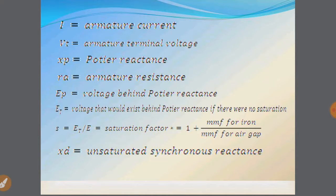So before going to the vector diagram, there are few notations which we will be using there. I is the armature current, VT the terminal voltage, XP will be considered as the Potier reactance, RA is the armature resistance, EP will be the voltage behind the Potier reactance, ET will be the voltage that would exist behind the Potier reactance when there is no saturation. S is the saturation factor which is given by a ratio of ET and EP, which is equal to 1 plus MMF of the iron divided by the MMF of the air gap, and finally XD will be the unsaturated synchronous reactance.